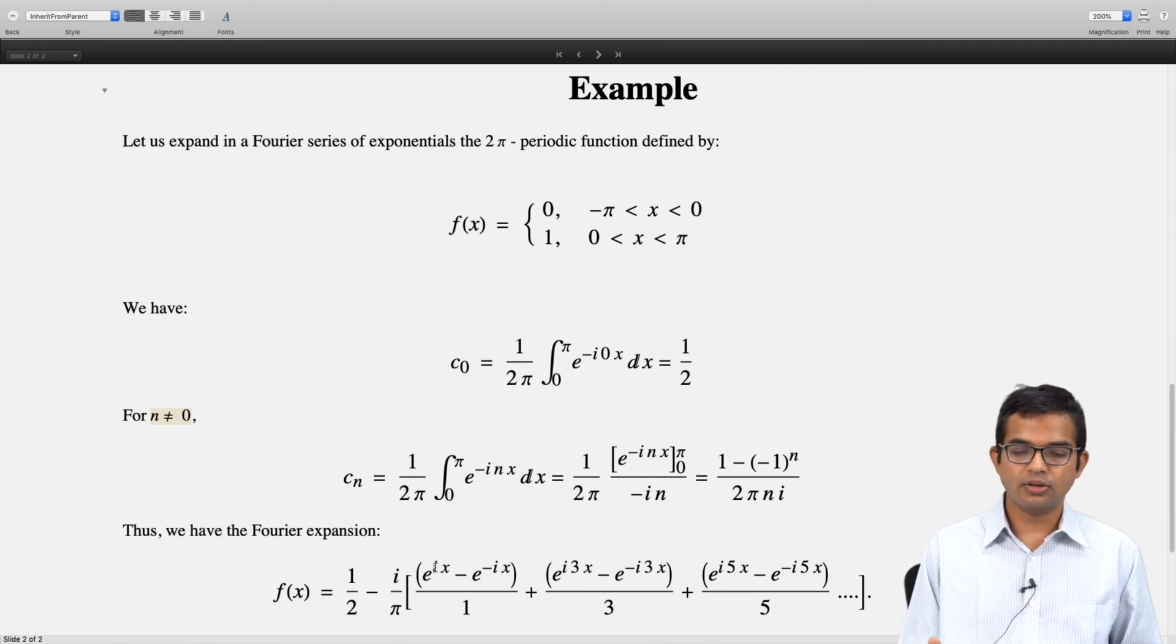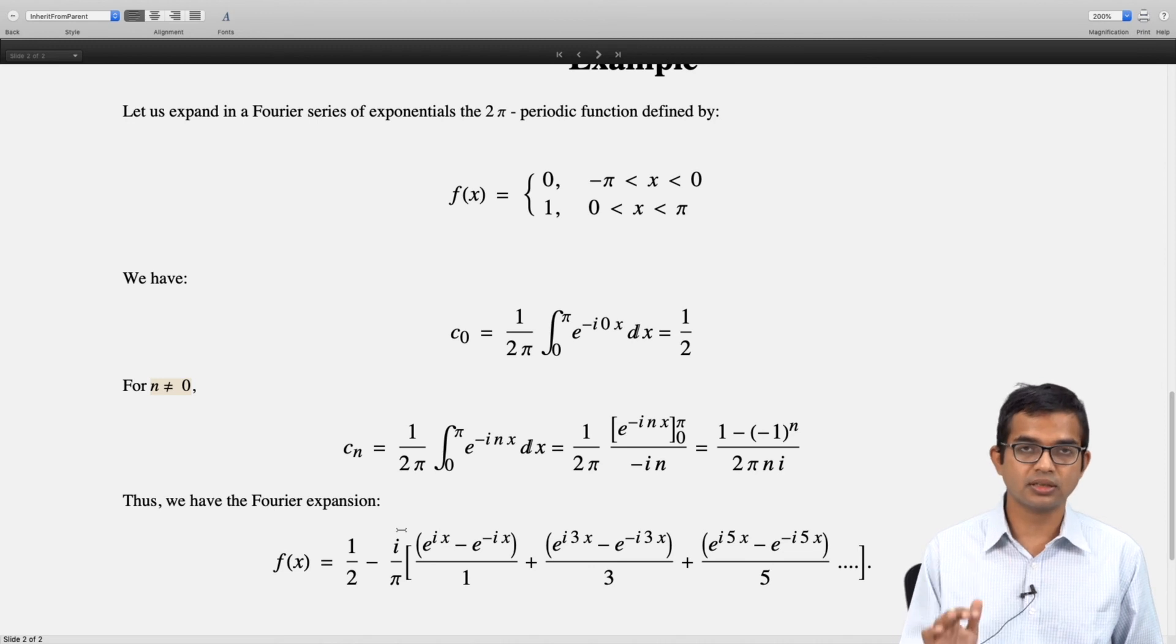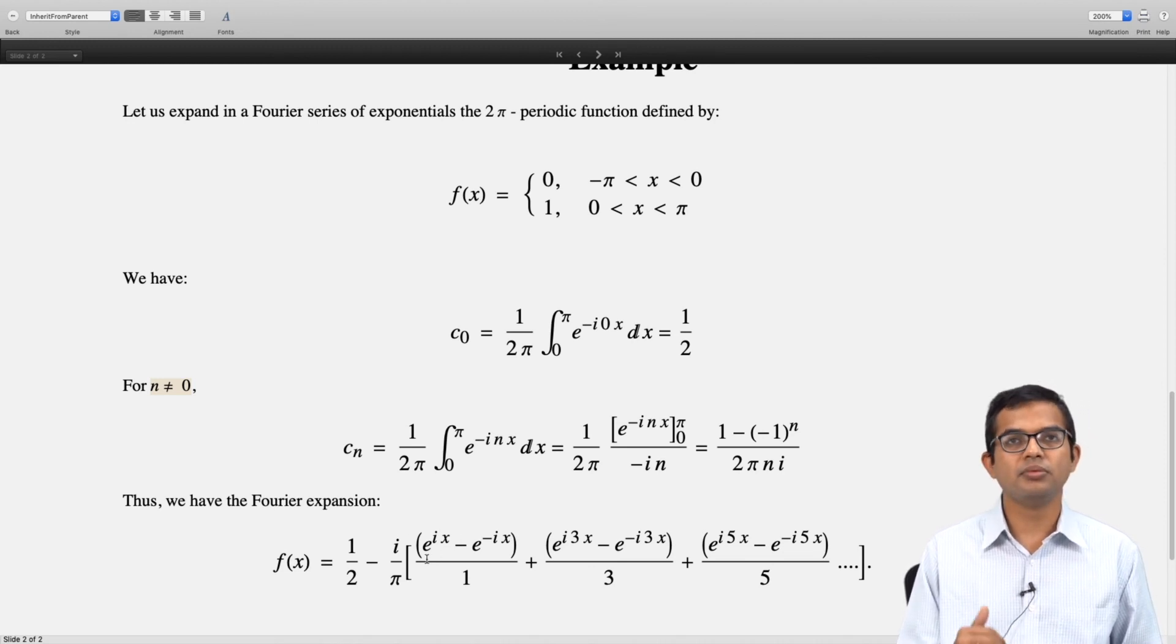If you carefully look at all the factors involved, you can write down this Fourier expansion. You can go back to the previous discussion about writing this in terms of sines and cosines and convince yourself that indeed we had only sines. If you look at the way I am grouping these terms, you are going to get only sines.